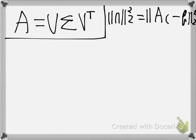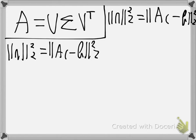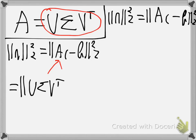Now, let's maybe rewrite it here. We will substitute, we will take what's here, and we will substitute in A. So we will get U sigma V transpose times c. Let's rewrite that, minus b.